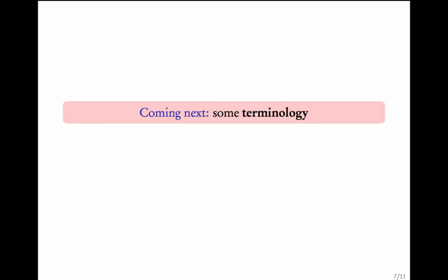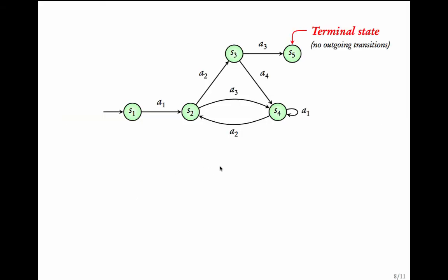Now, we have seen two examples of transition systems. Let us define some terminology. So, if in a transition system, there is a state with no outgoing transitions, such a state is called a terminal state. Just remember this.